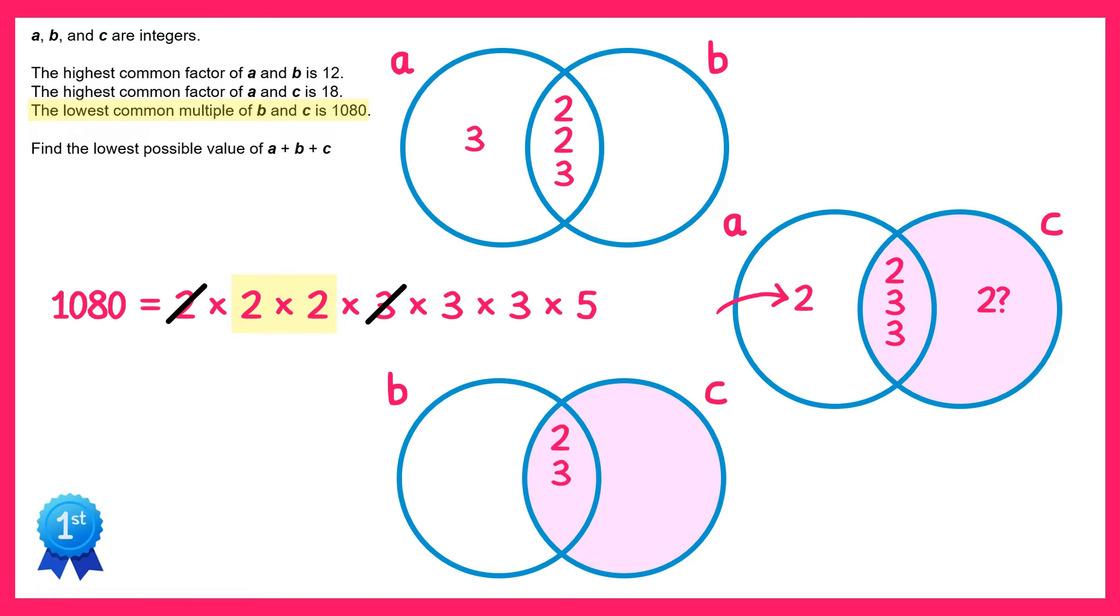Now if we can't place a 2 inside the C circle, these extra two 2's that we need must go inside the B circle instead. So let's put those in there.